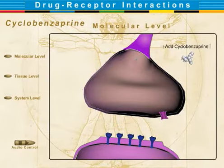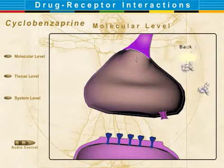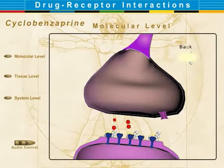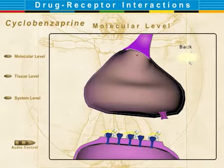When we add cyclobenzaprine, the binding of serotonin is blocked at the 5-HT2 receptor. This means that the normal stimulation of the postsynaptic nerve cell is inhibited, so the transfer of pain stimuli is decreased.